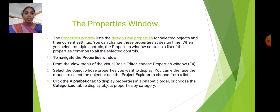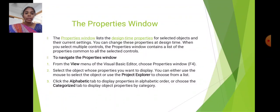You can change these properties at design time. When you select multiple controls, the Properties window contains a list of the properties common to all the selected controls. To navigate the Properties window, from the View menu of the Visual Basic Editor, choose Properties Window. Select the object whose properties you want to display — you can either use the mouse to select the object or use the Project Explorer to choose from your list. Click the Alphabetic tab to display properties in alphabetic order, or choose the Categorized tab to display object properties by category.